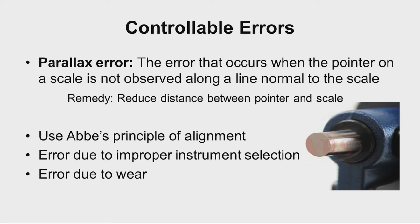Under controllable errors, we have another error called parallax error. This error occurs when the pointer on a scale is not observed along a line normal to the scale. The remedy for this is we should always try to reduce the distance between the pointer and scale so that parallax error is minimized. We should also use the principle of alignment — the axis of measurement and the instrument measurement should always be collinear, so that errors due to distortions are eliminated.